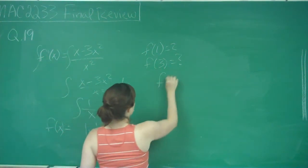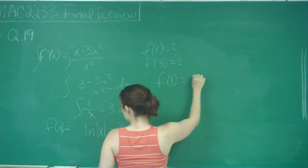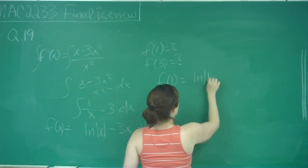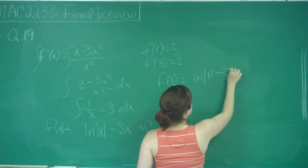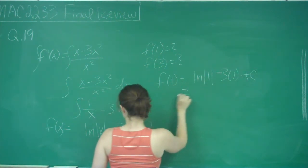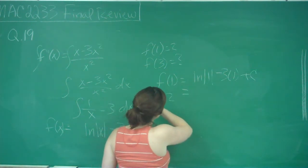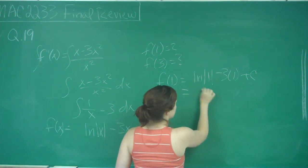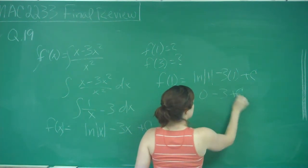It says that f(1) = 2. So we have ln(1) - 3(1) + c, and all of that is equal to 2. We know ln(1) is 0, so 0 - 3 + c = 2.